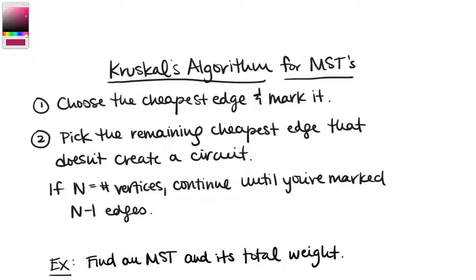First step: choose the cheapest edge — the smallest weight — and mark that. That's the first edge of your spanning tree. Then step two: choose the remaining edge that's the next cheapest, as long as it doesn't create a circuit. You just keep marking the cheapest edge until you've reached a spanning tree. If you have n vertices, you keep going until you've chosen n minus 1 edges.